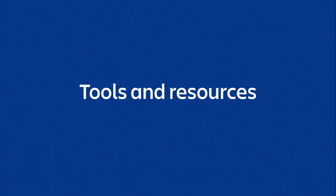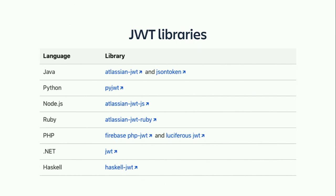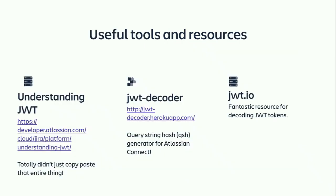Now we know how to do the whole thing from scratch, but we don't necessarily want to do that in our application. Here are some tools and resources you can use to automatically generate and verify your JWT tokens. There are JWT libraries for many different languages — many of them are Atlassian-maintained. You can see a full list at the Atlassian developer blog post called 'Understanding JWT'. There's also something called the JWT decoder, which is more useful for generating query string hashes and helping you verify them. Finally, there is JWT.io — a fantastic website that lets you paste in any JWT token in Base64 encoded form, and it'll format it nicely, decode it, and show you the contents.